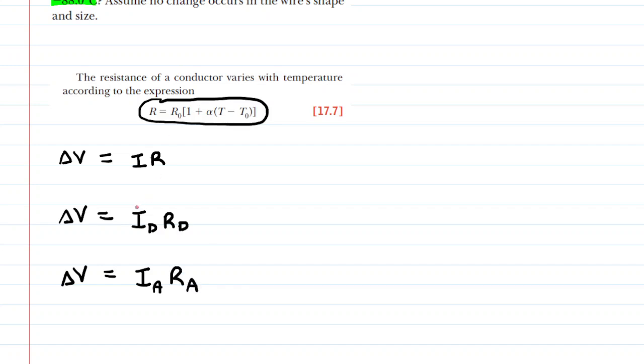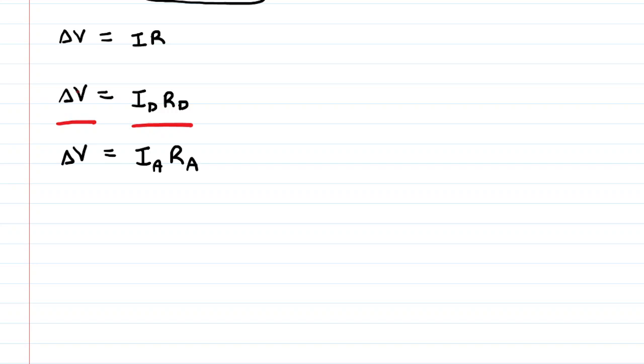One trick we could do with these two equations is to divide them. So if we divide one equation by the other, we're going to have delta V over delta V, which of course equals 1. And then on this side, we have this ratio of current times resistance in Death Valley over the corresponding values in Antarctica.